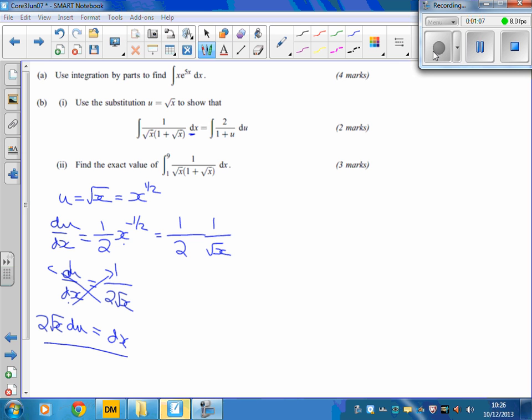Now let's rewrite all of this. We've got the integral of 1 over the square root of x times 1 plus the square root of x dx.